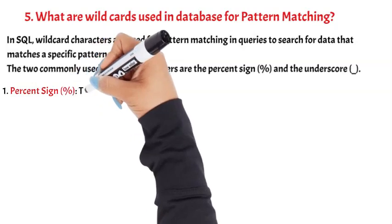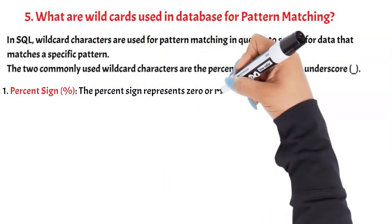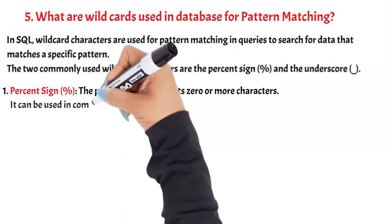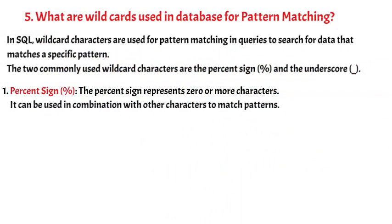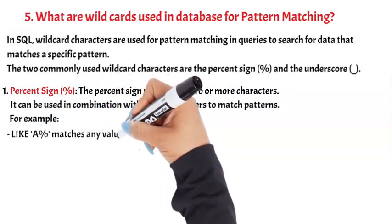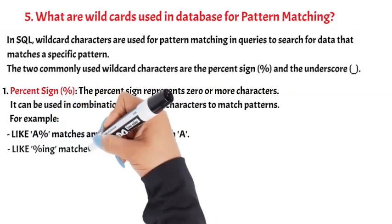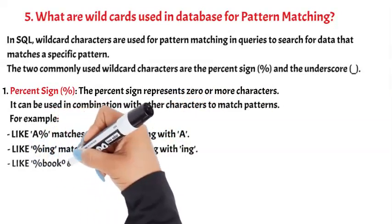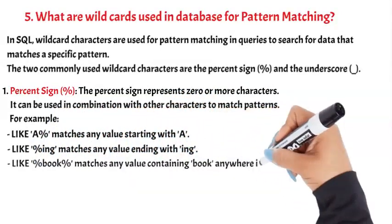1. % (Percent): The % represents zero or more characters. It can be used in combination with other characters to match patterns. For example: LIKE 'a%' matches any value starting with 'a'; LIKE '%ing' matches any value ending with 'ing'; LIKE '%book%' matches any value containing 'book' anywhere in the string.